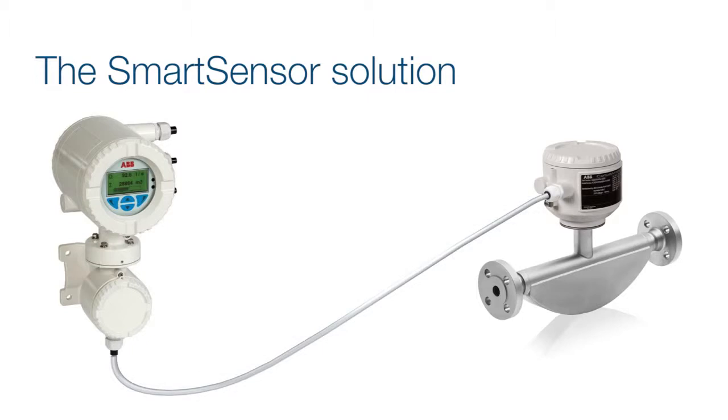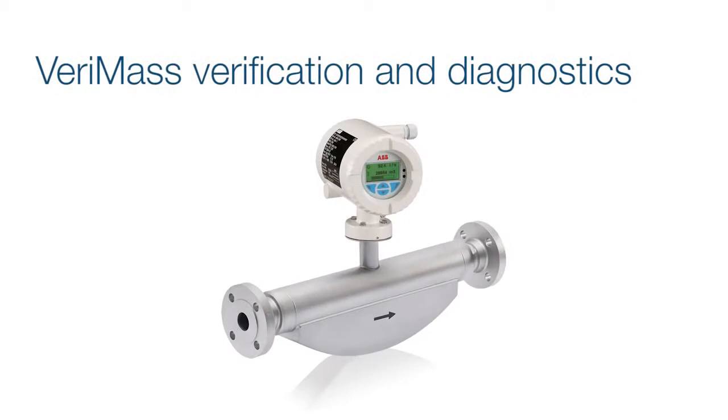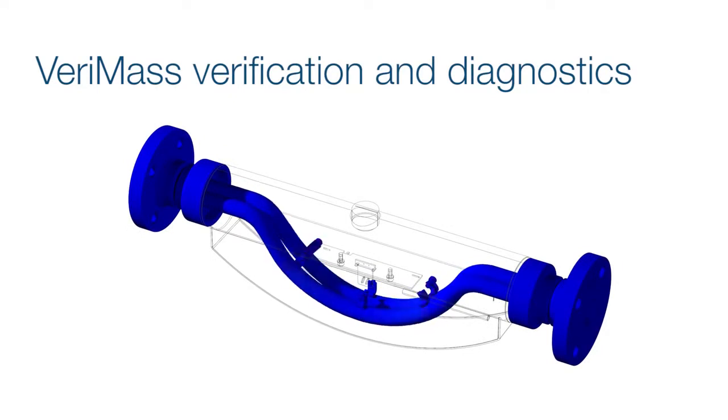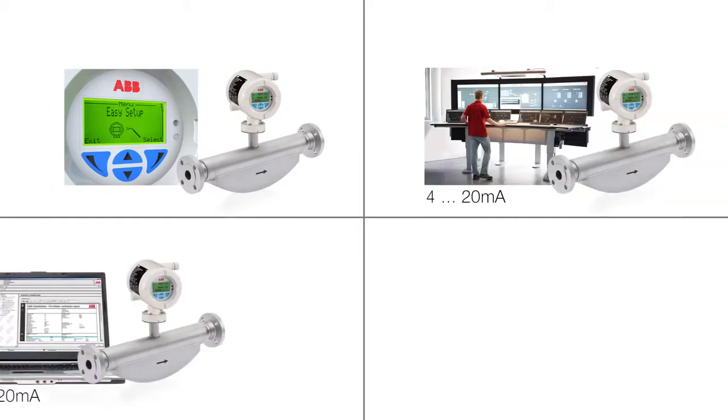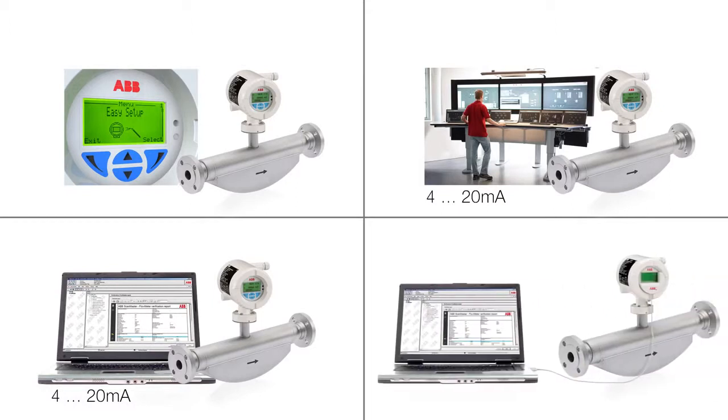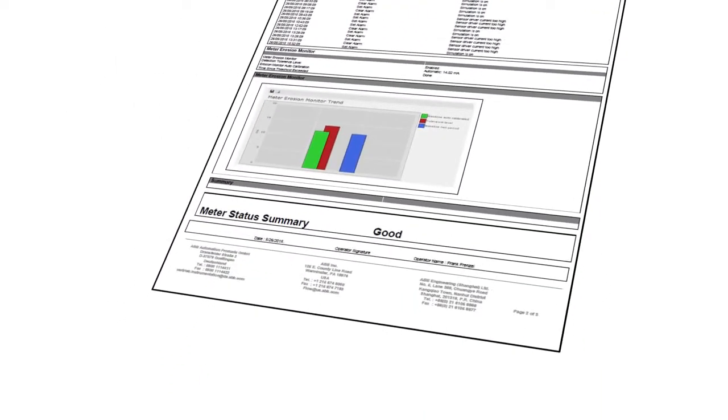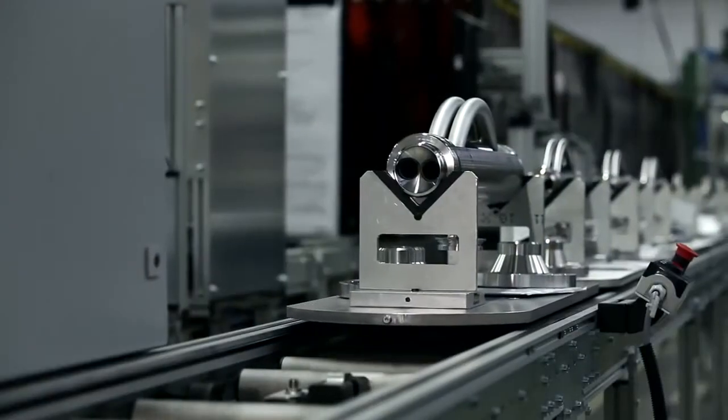The integrated verification diagnostics detect possible tube erosion or coating affecting meter accuracy. It can be operated through the local display, the control system, or PC. With the ABB local adapter, the PC can be connected without the need to open the housing. The verification report summarizes the meter status and shows meter trends.